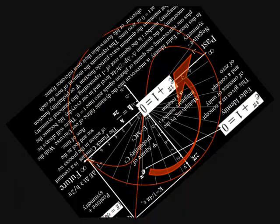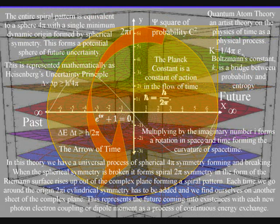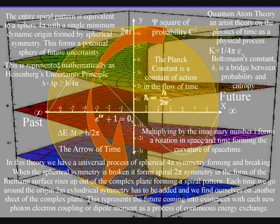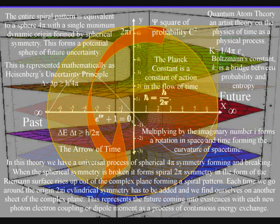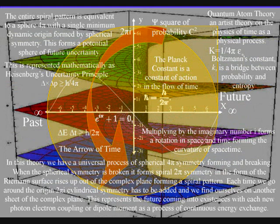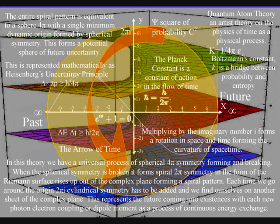When the spherical symmetry is broken, it forms spiral symmetry in the form of the Riemann surface rising up out of the complex plane, forming a spiral pattern. Euler's identity is at the heart of this process. The easiest way of looking at this is that the only number you could add to the number 1 to get 0 is minus 1, and this forms a rotation that breaks the spherical symmetry. Also, in mathematics, the imaginary number i is the square root of minus 1.